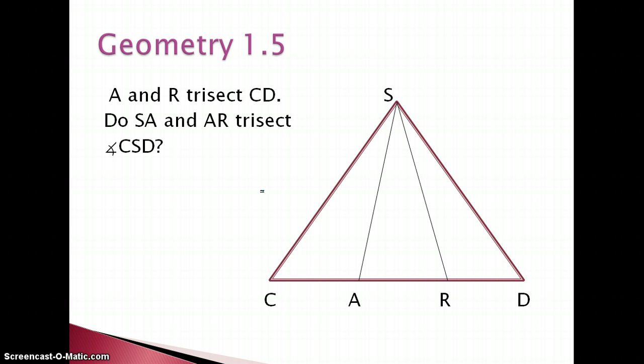And lastly, A and R trisect CD. So with that, I'm going to make my markings. So trisect: those three pieces are congruent, they have the same measure. So from that, do SA and AR trisect angle CSD? So we want to know if these rays trisect this angle. Well, with the amount of information that we're given, we cannot make that conclusion.